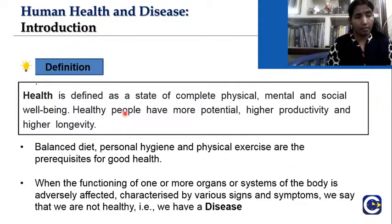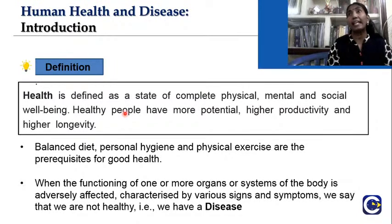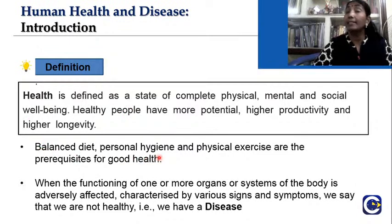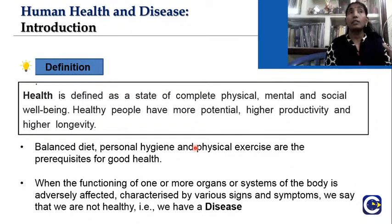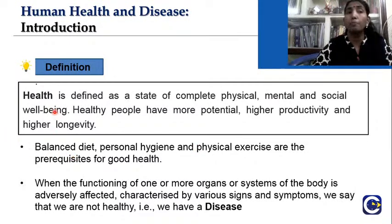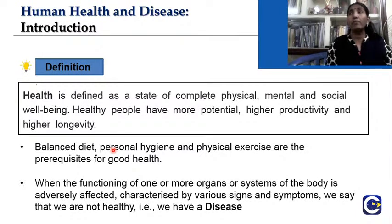How can we achieve health? There is a triad that brings about healthiness: a balanced diet, personal hygiene, and physical exercise. A balanced diet means including in your three meals a proper proportion of starch, fibers, and five portions of fruits and vegetables that supplement you with protein, vitamins, and minerals. A balanced diet is very important to make ourselves healthier.